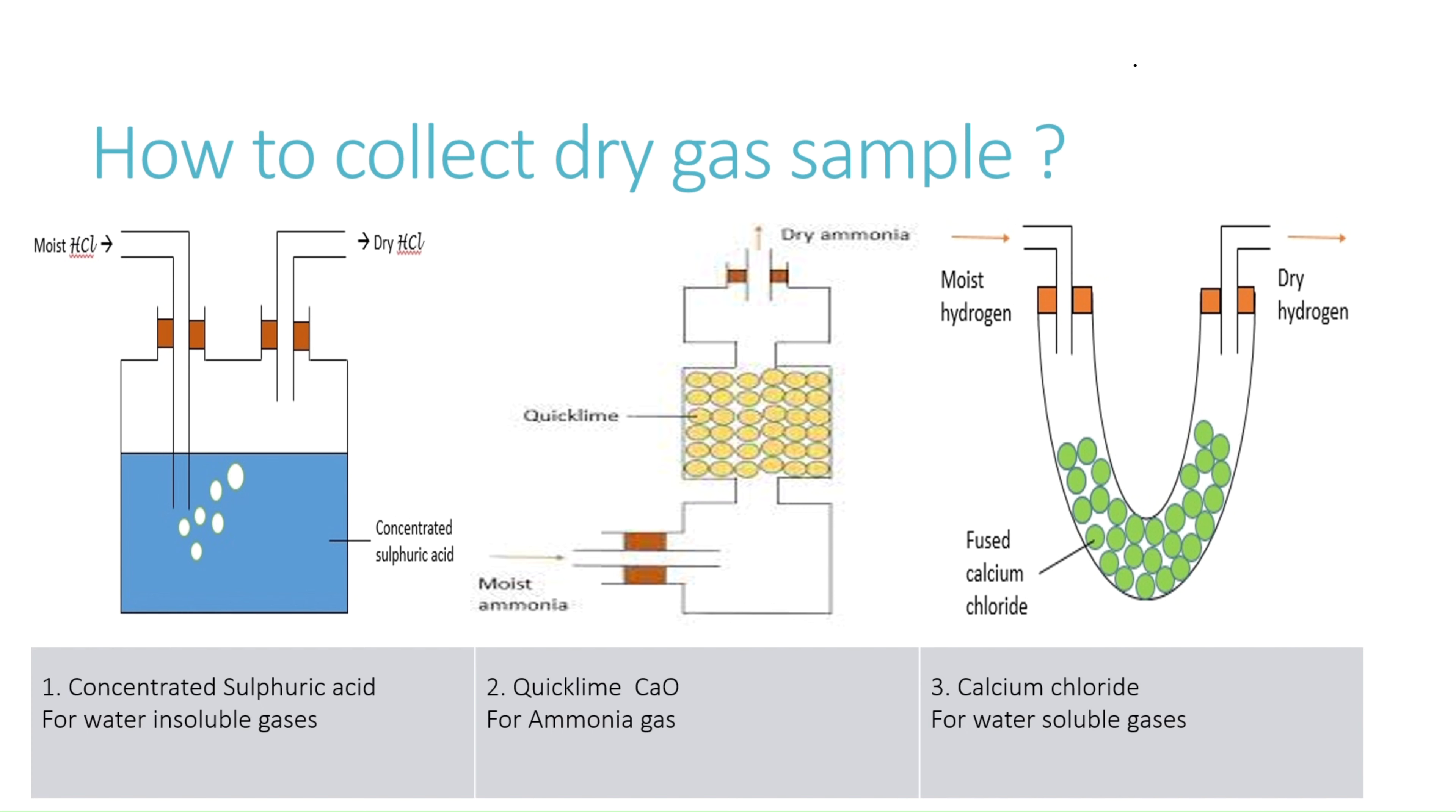Instead of sulfuric acid, quick lime, which is calcium oxide, can be used to dry ammonia gas. The third drying agent is calcium chloride. Water soluble gases can be dried by using calcium chloride. So here we have three drying agents that can be used to dry a gas sample: concentrated sulfuric acid, quick lime, and calcium chloride.